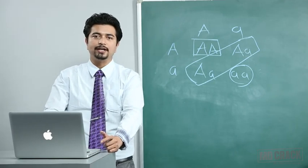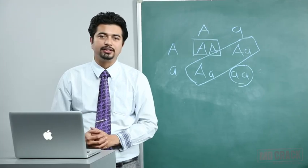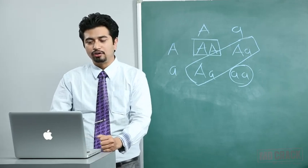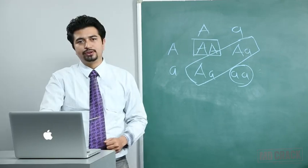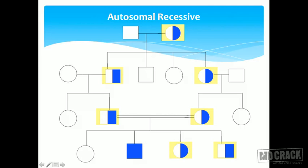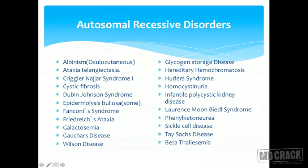Autosomal recessive disorders are more common in consanguineous marriages, as marrying close relatives increases the risk. Clinical features of autosomal recessive disorders are generally more severe compared to autosomal dominant. The pedigree chart shows unaffected parents with the trait who, when they marry and their children receive both defective genes, produce affected offspring in the homozygous state. There is again a long list of autosomal recessive disorders.